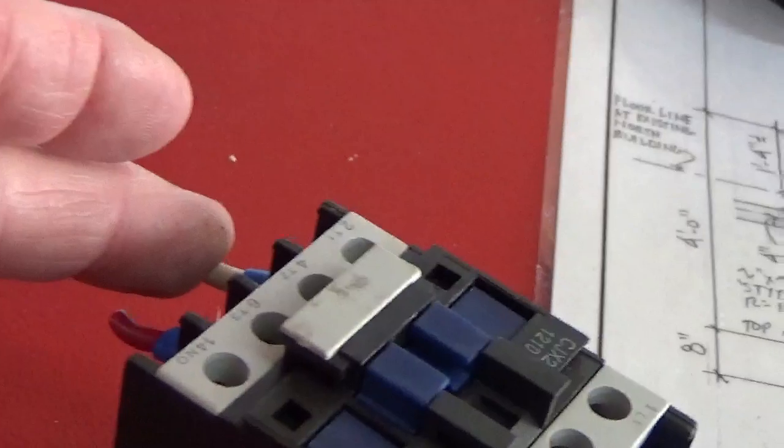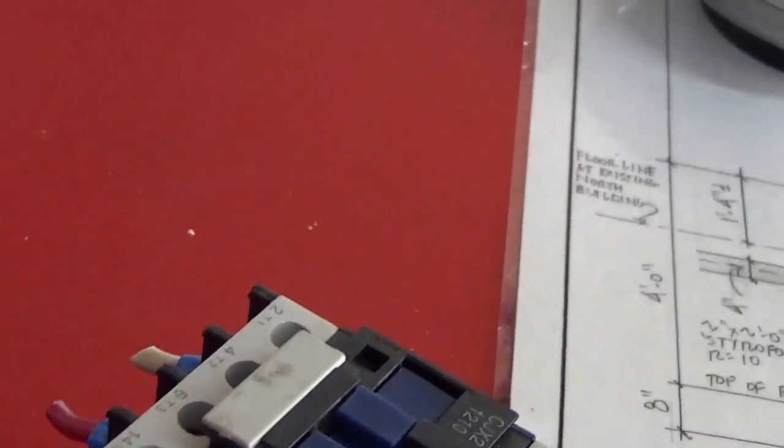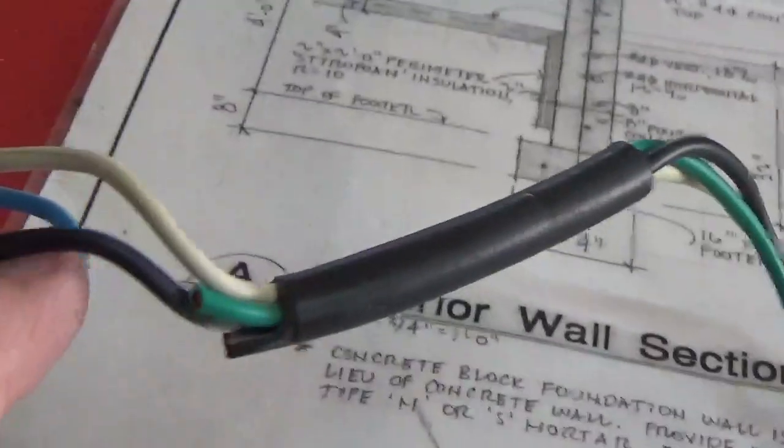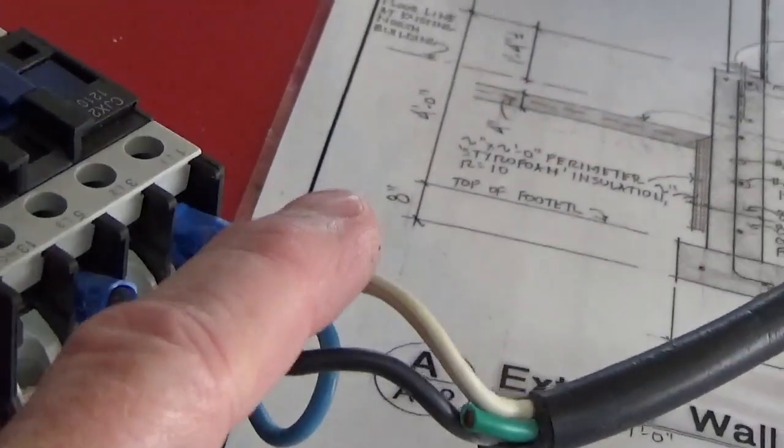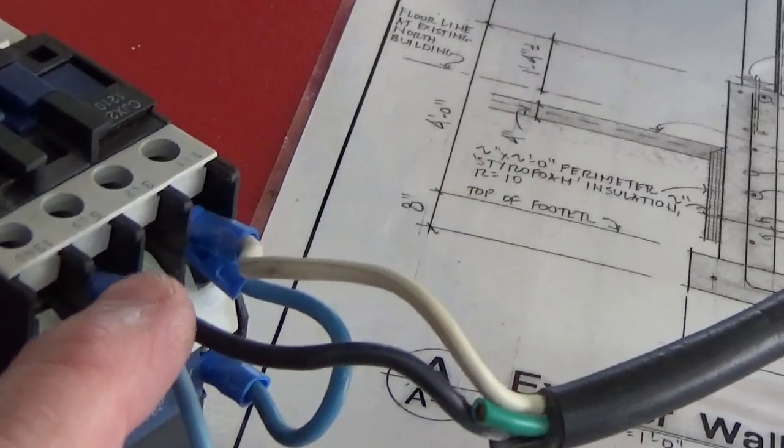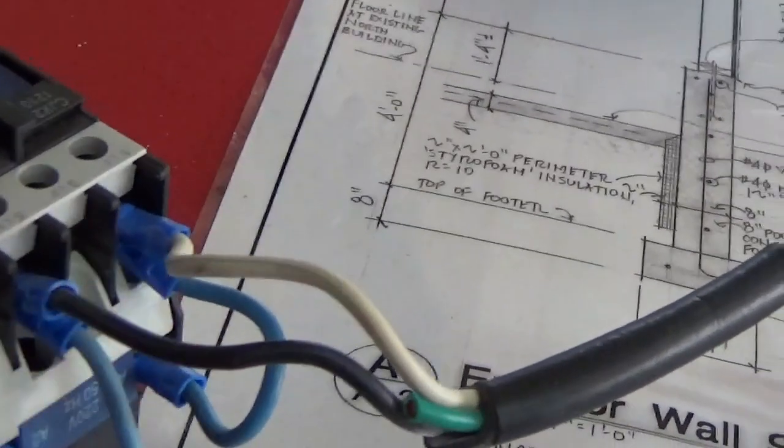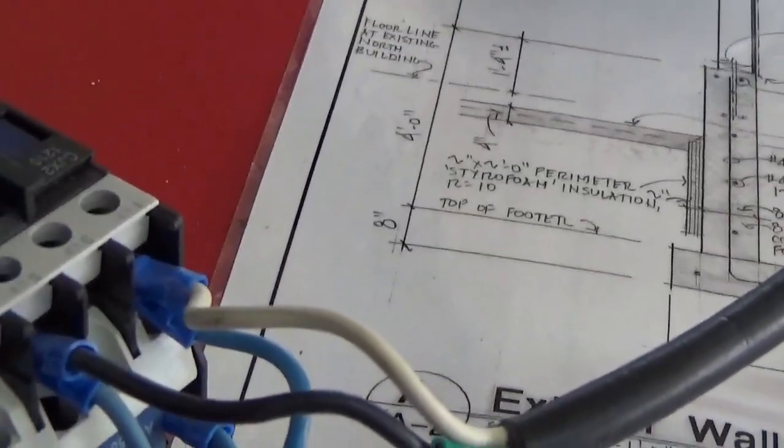Now, the wires coming out of this side of the contactor will go directly to the motor. The wires on this side of the contactor are coming from your power source. 220 volt, when you run an electric meter across these two terminals, your multimeter is going to say 220 volt.